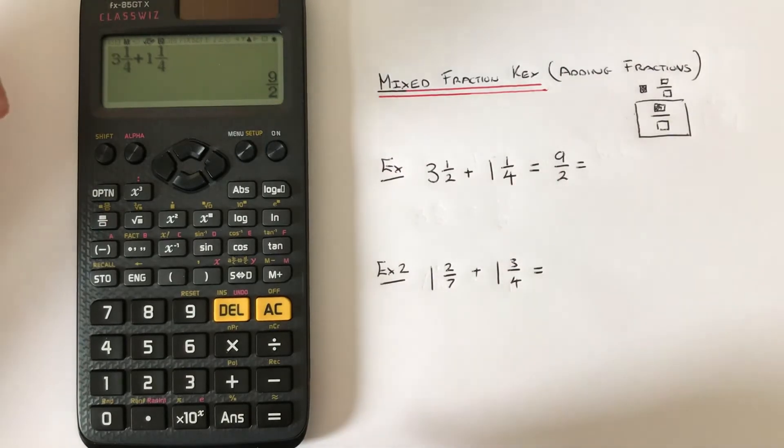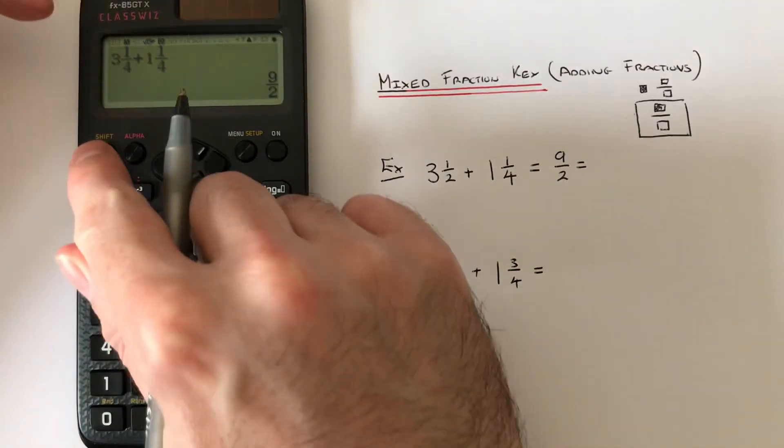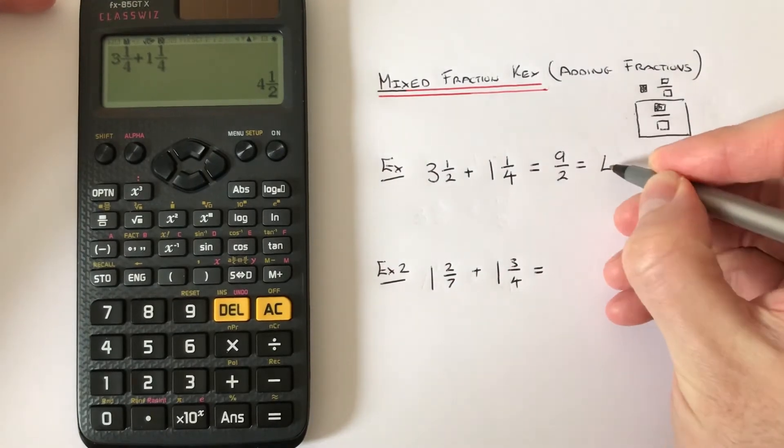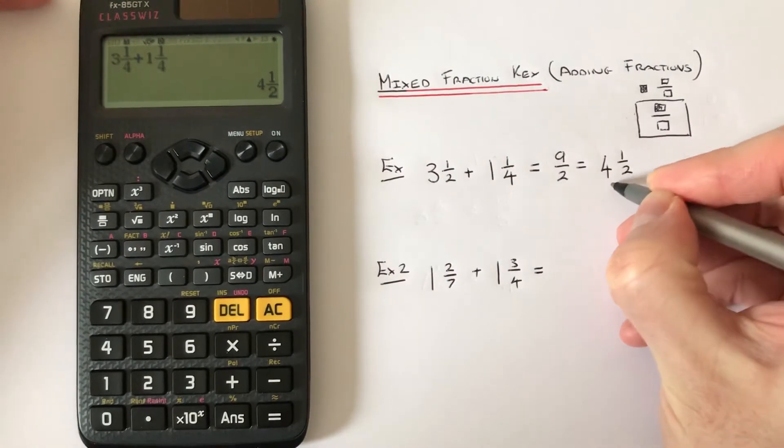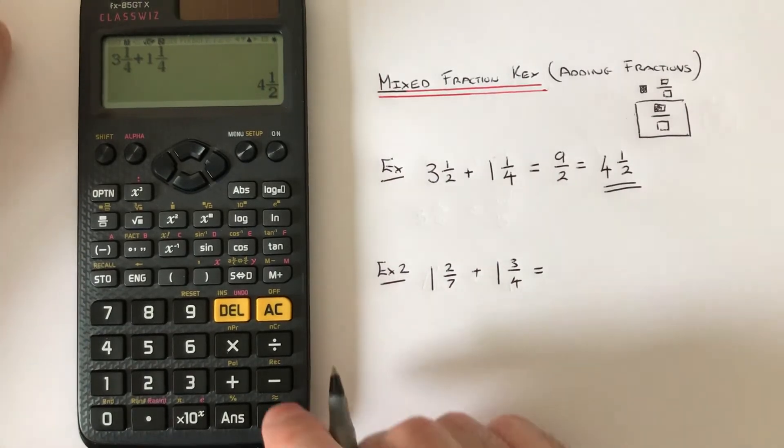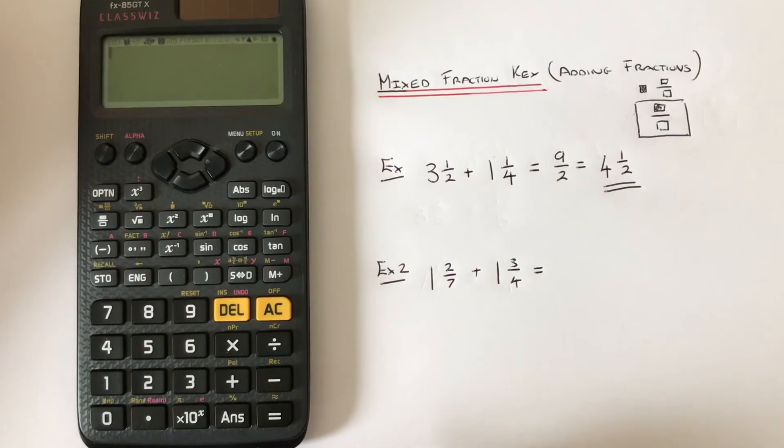Let's have a look at the second example. We've got 1 2/7 + 1 3/4. Press shift, mixed fraction, then 1, right key, 2, right key, 7, right key, plus.